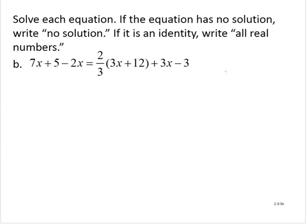7x plus 5 minus 2x is equal to 2 thirds of 3x plus 12 plus 3x minus 3. Let's simplify on the left hand side. I've got a 7x and a minus 2x. So that's a 5x plus 5.